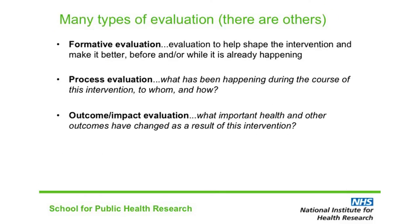There are many types of evaluation. Here on this slide, we've categorized them into three types. The first is formative evaluation — it's the evaluation intended to help that particular intervention. The idea is you produce interim findings while the intervention is still being rolled out, and the people delivering it can see how things are going and may change the way they're delivering it as a result. Formative evaluation deliberately tries to produce an observer effect — it tries to change the intervention it's evaluating as it's being delivered.